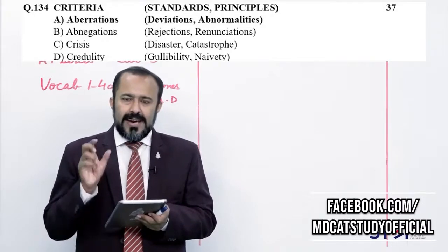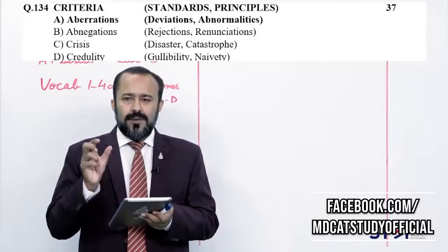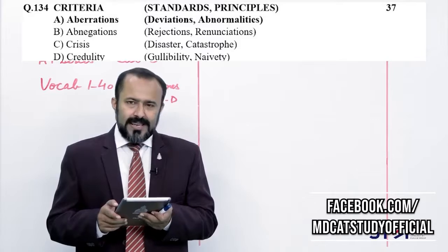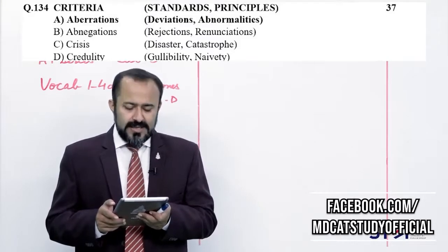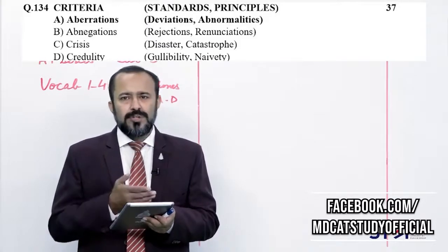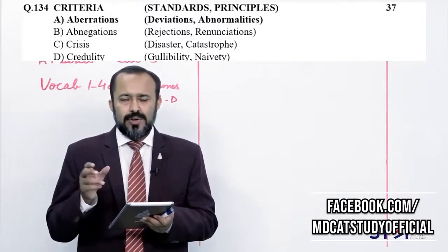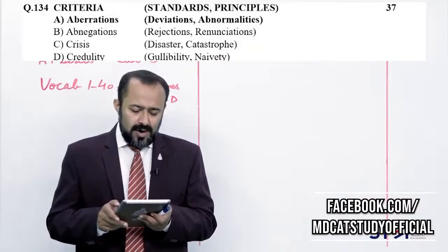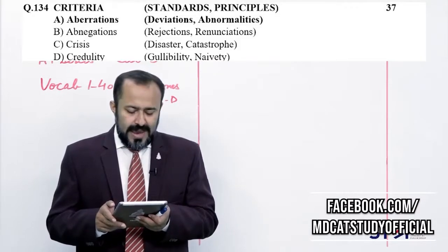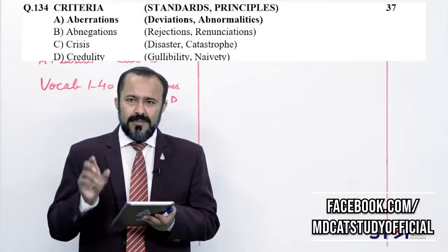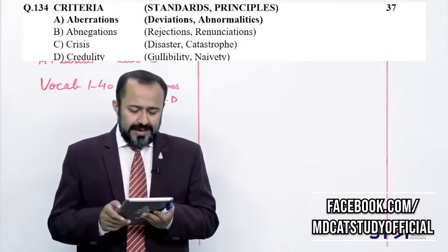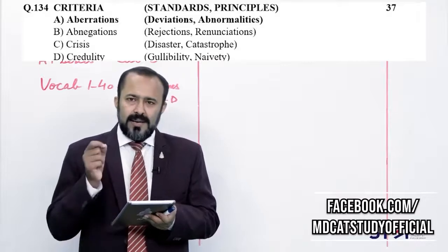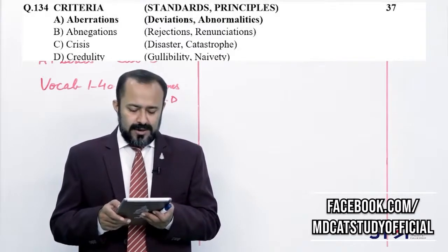Question 133: criteria — particular set of facts جن کی بنیاد پہ کسی چیز کو judge کرتے ہیں — set information ہے۔ Aberration — اس سے ہٹی ہوئی چیز جو regularity follow نہ کرے۔ Criteria regular, aberration irregular — Alpha correct answer ہے۔ Abnegation — کسی چیز کو چھوڑ دینا — answer نہیں۔ Crisis — easy word، answer نہیں۔ Credulity — آسانی سے یقین کر لینا — criteria کا antonym نہیں۔